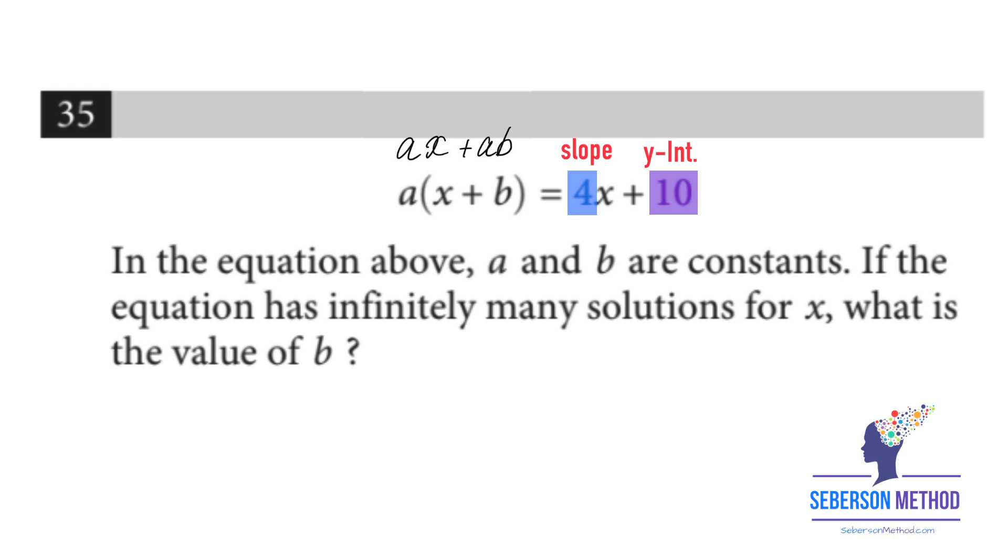Your a is four. Don't forget to expand. So it's going to be ax plus ab. And then ax is going to equal to 4x. So a is going to equal to four. Ab is going to equal to ten. Or 4b is going to equal to ten. What is b equal to? b equals to two and a half.